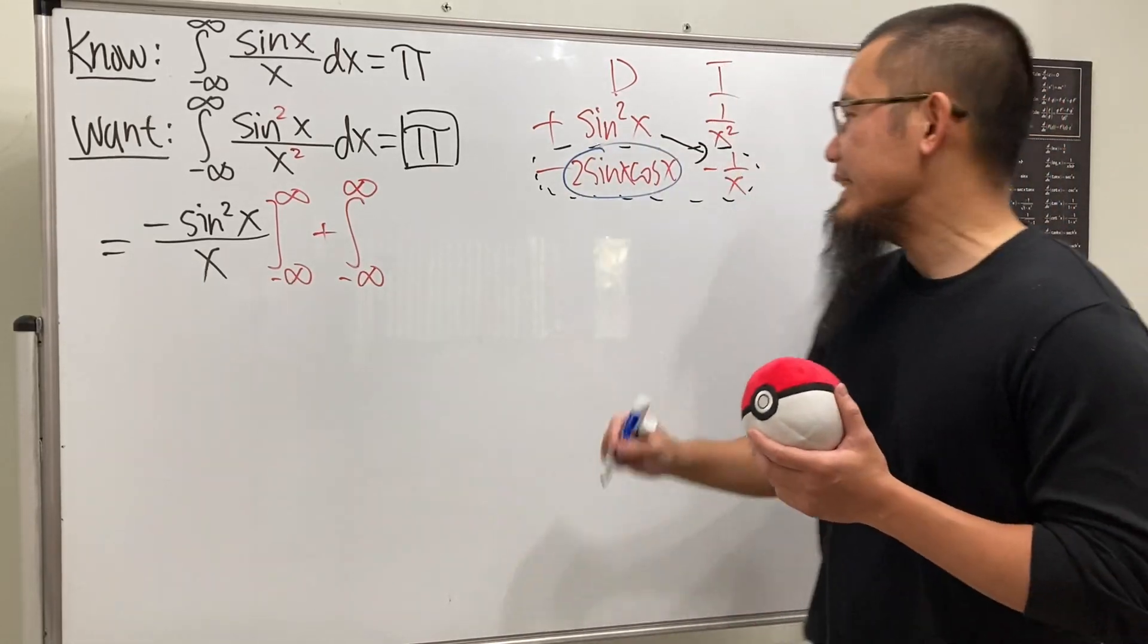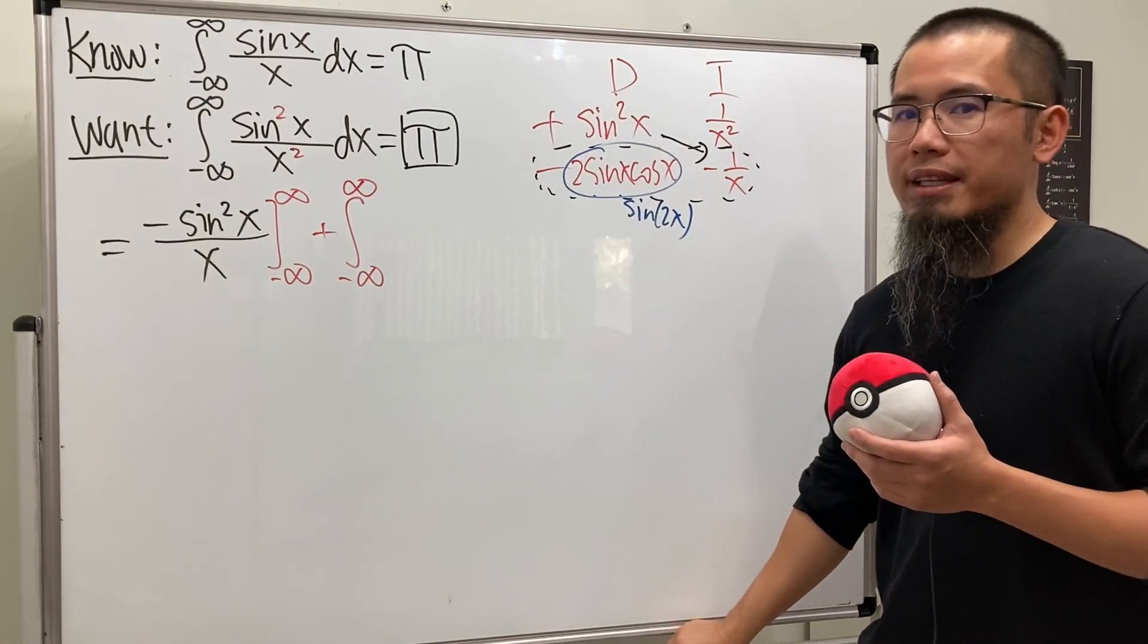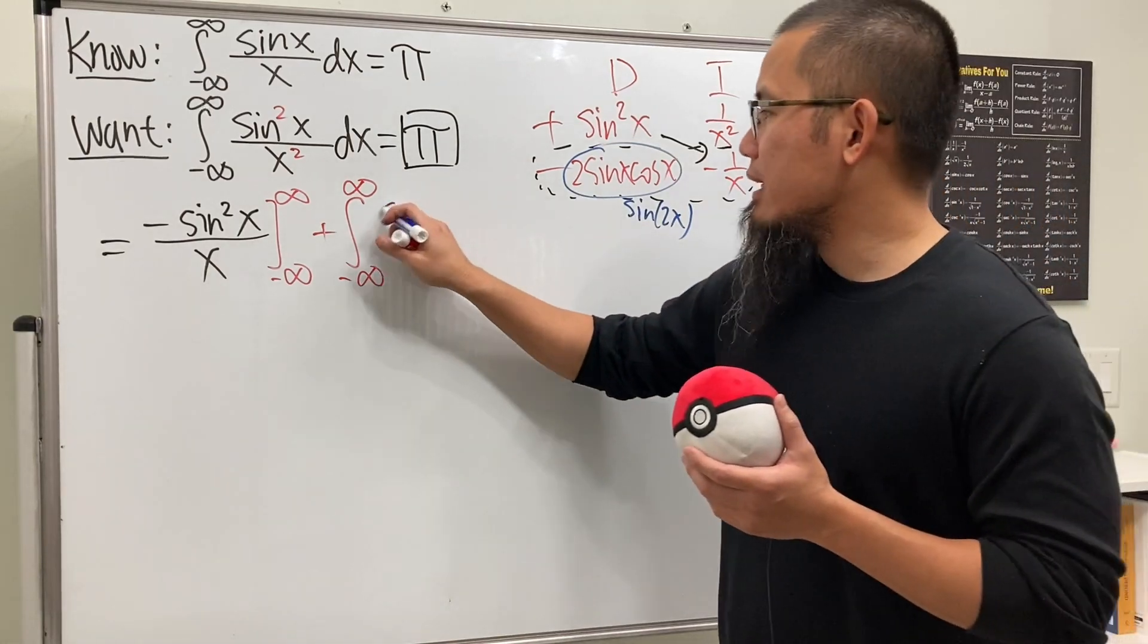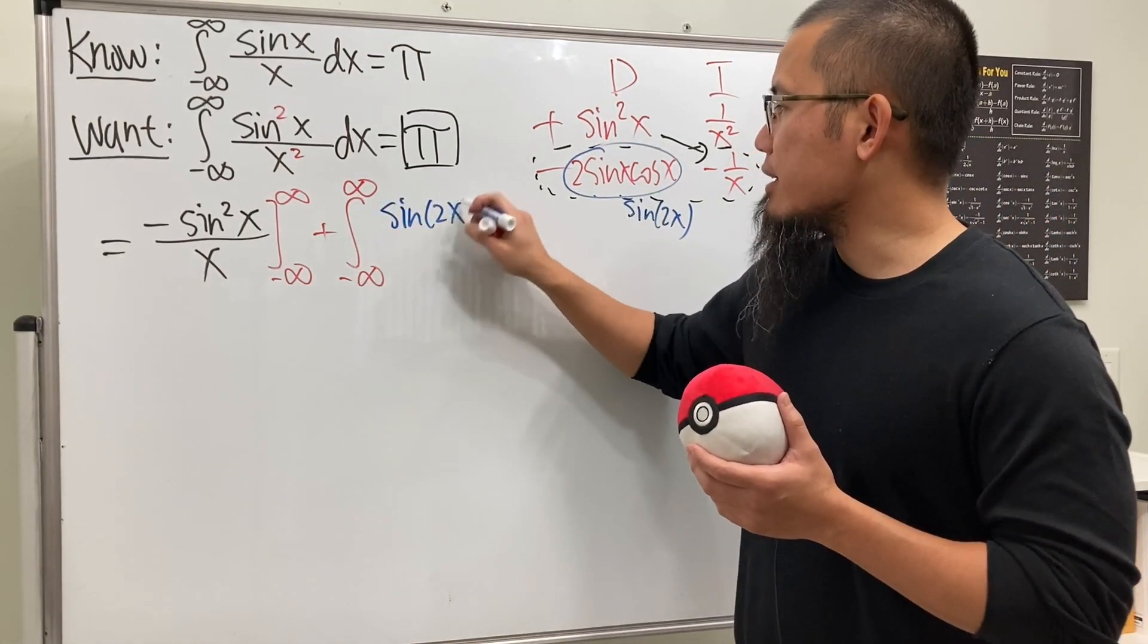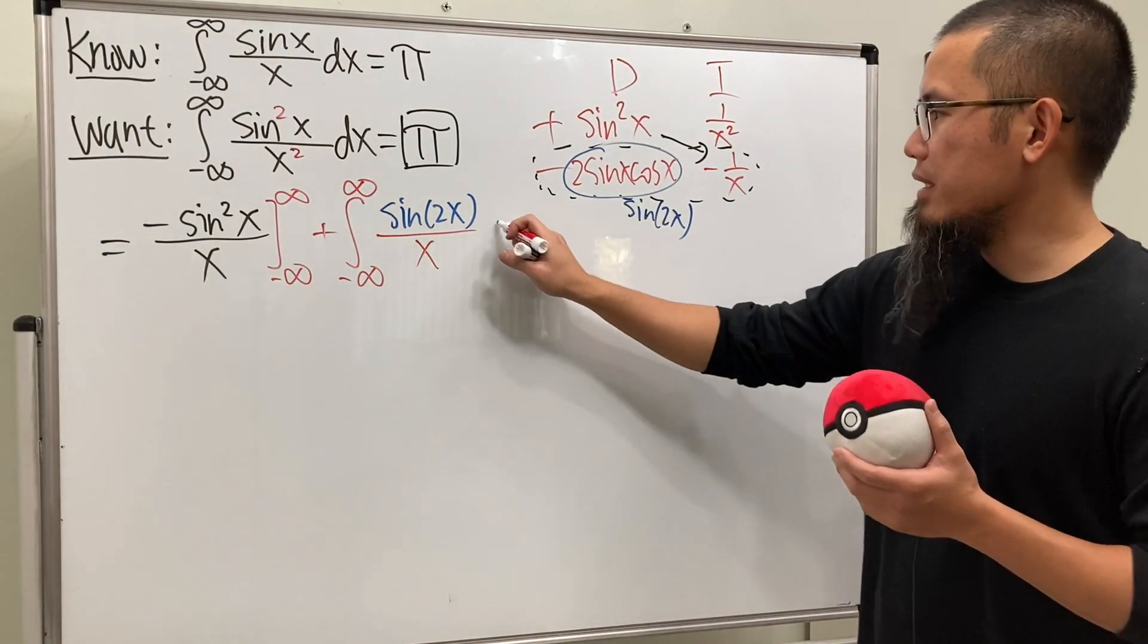2 sine x cosine x is in fact just sine of 2x, thanks to the double angle identity. Therefore, when we do this times that, we will just have sine of 2x on the top over x, and then of course we have the dx here.